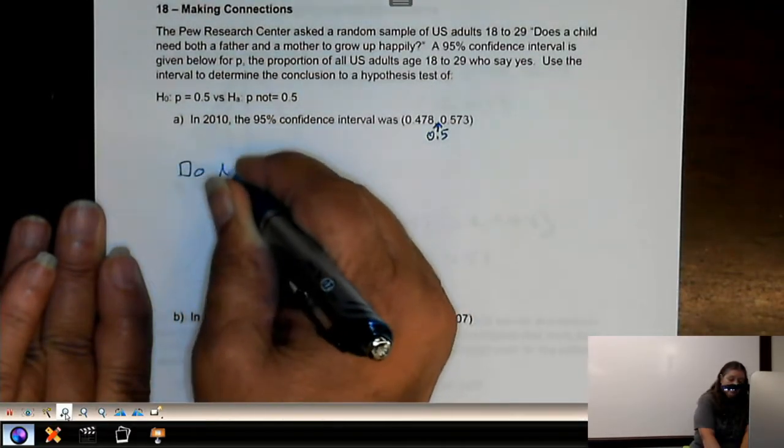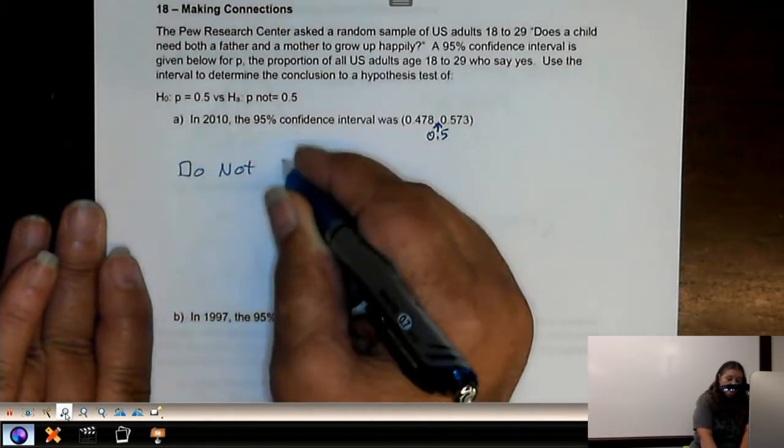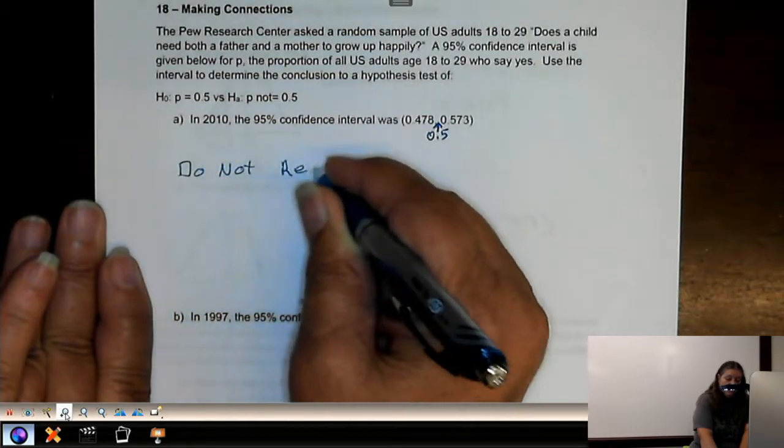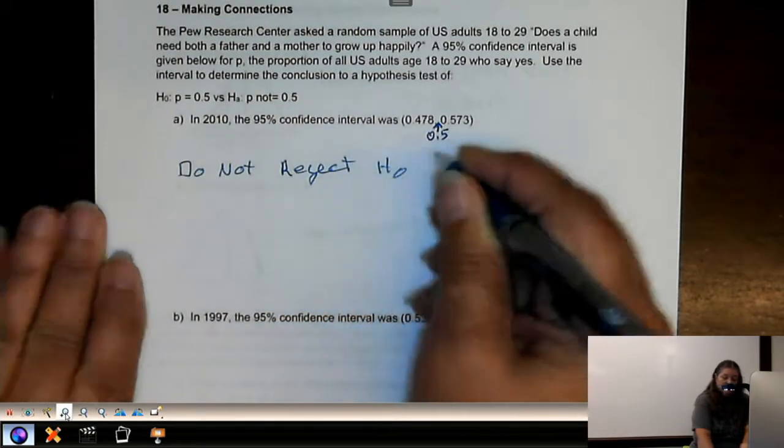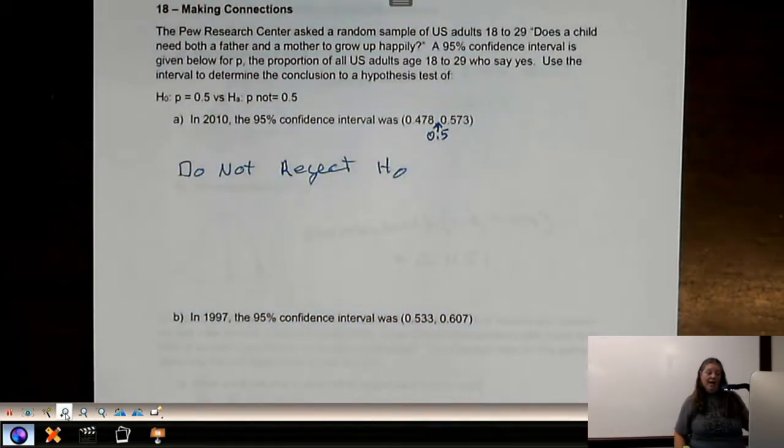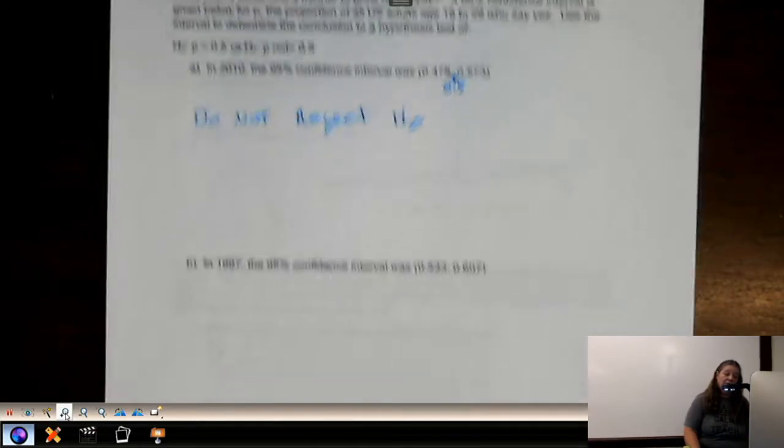we do not reject the null hypothesis. Remember, any values within the confidence interval are plausible values. So this is saying that 0.5 is a plausible value with that confidence interval.